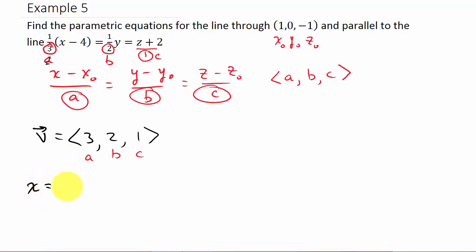We've got x is equal to x naught plus a t, y is equal to y naught plus b t, and z is equal to z naught plus c t.